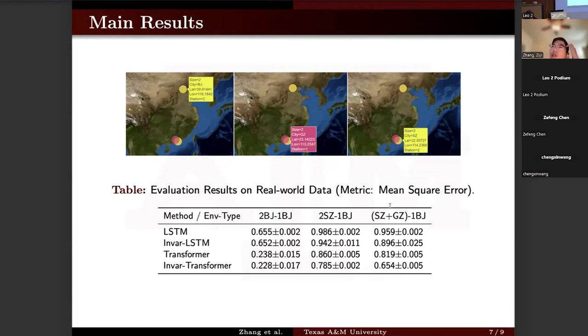If we replace one of the Shenzhen by another city, Guangzhou, the performance is better, which can be attributed to the distribution of Guangzhou being closer to Beijing than Shenzhen. Besides, we also integrate the invariant risk minimization mechanism into transformer model, which also brings improvement.